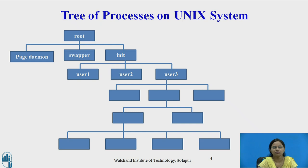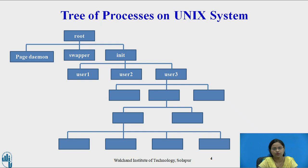Let us see the tree of processes on the Unix operating system. In Unix, processes are created using the fork system call. Initially, whenever the system boots, the root process is created. The root process is responsible for creating the page daemon, swapper, and init process. Then, the init process creates different user processes, and user processes again create different processes using the fork system call. In this way, a tree of processes can be formed on Unix.